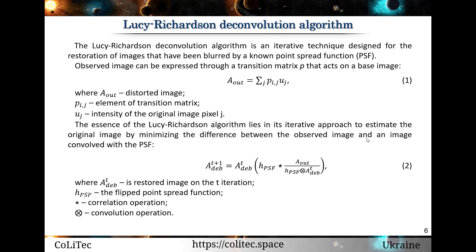I want to tell you about the developed cloud-based information system for astronomical image processing, which allows the end user to perform blurred image restoration. For such image restoration, we selected the Lucy-Richardson deconvolution algorithm. This is an iterative technique designed for the restoration of images that have been blurred by a known point spread function, PSF. The essence of the Lucy-Richardson algorithm lies in its iterative approach to estimate the original image by minimizing the difference between the observed image and an image convolved with the PSF.